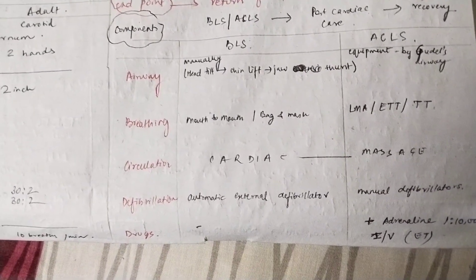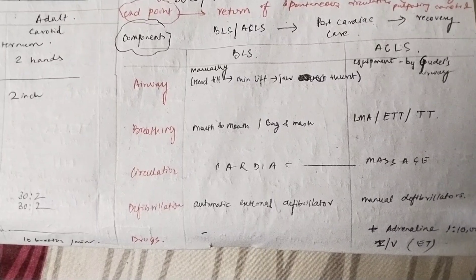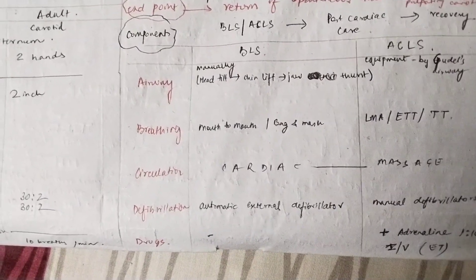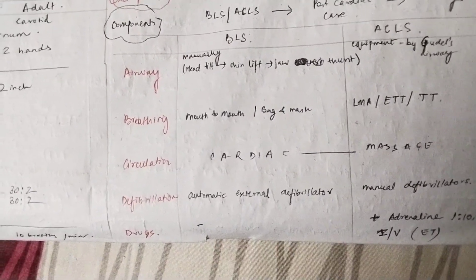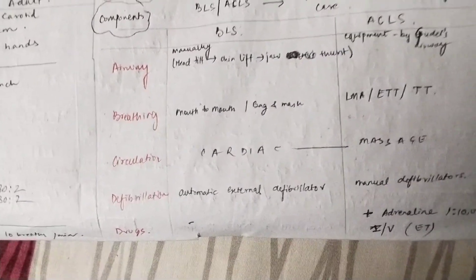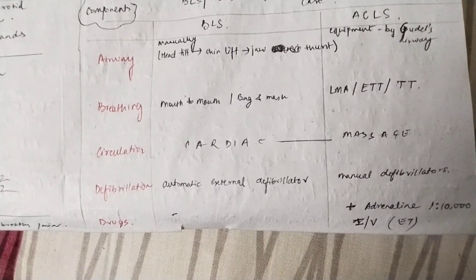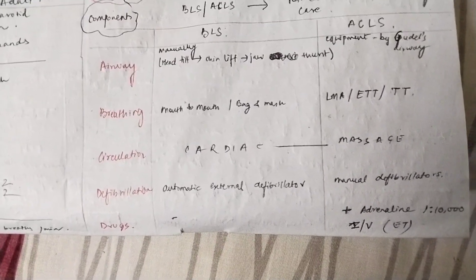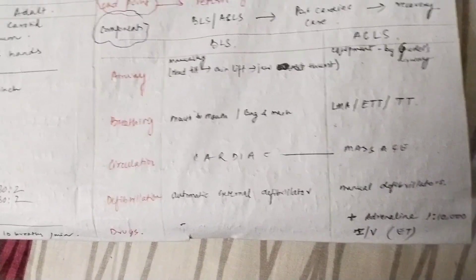Lastly, drugs. In BLS, no drug is given — common sense, you can't give a drug on a road or in a shop. But in the hospital setting for ACLS, adrenaline is given in a 1:10,000 dilution via IV access.